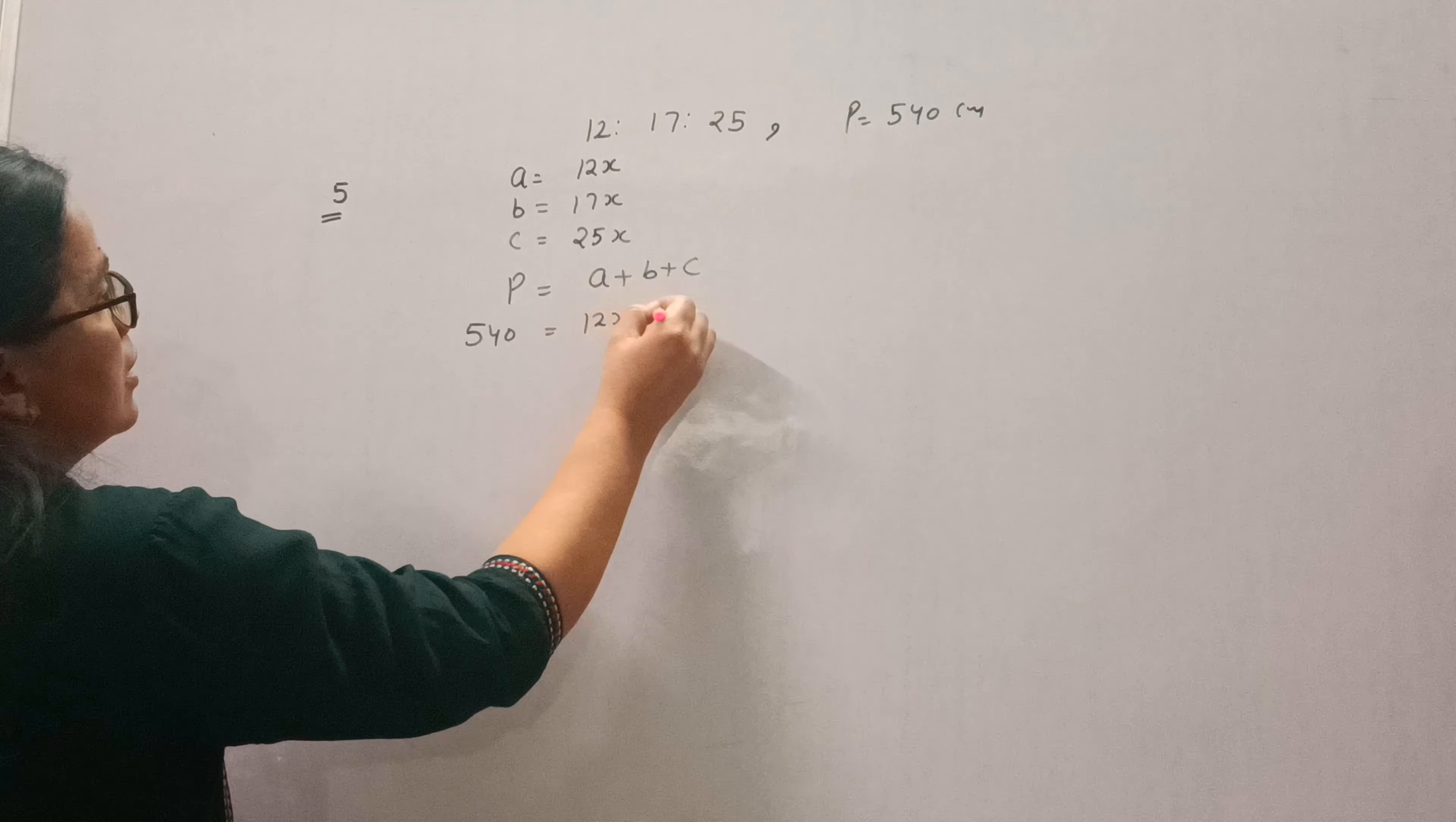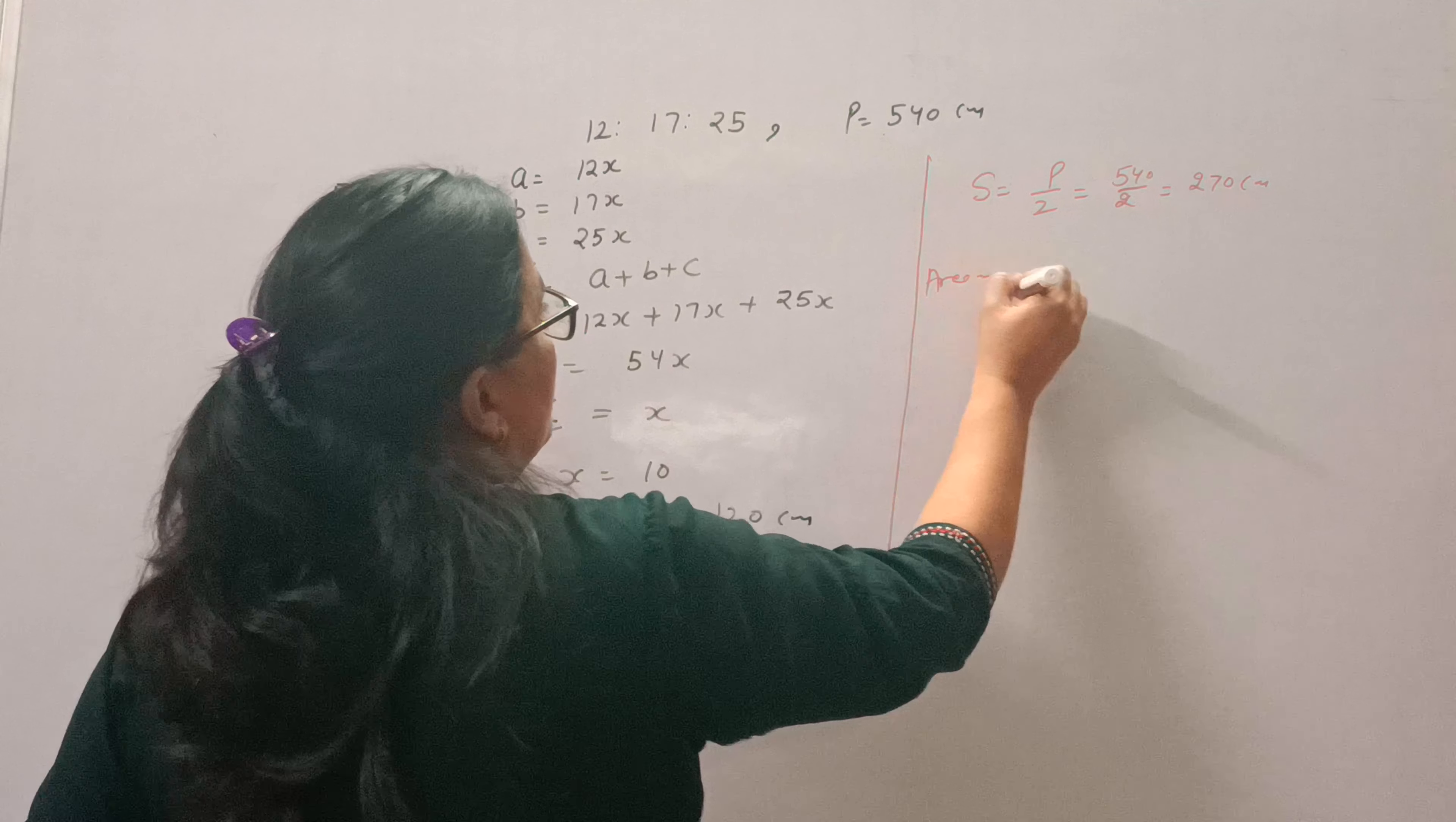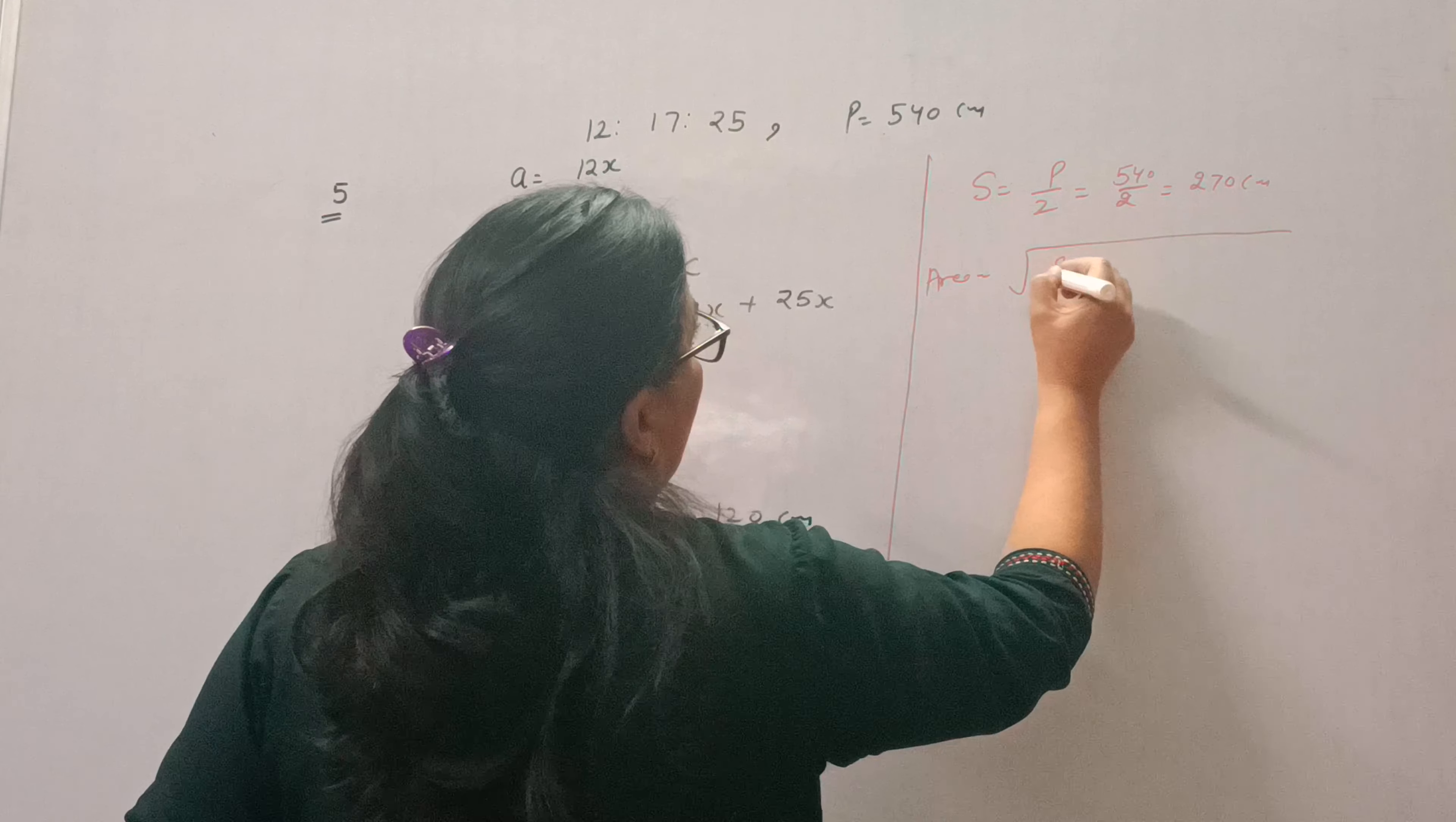So for finding area we want S, S means semi-perimeter. Perimeter is given to us, so semi-perimeter will be simply half of it, that will be 270 cm. Now write the formula of area.